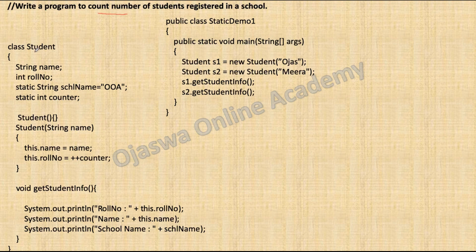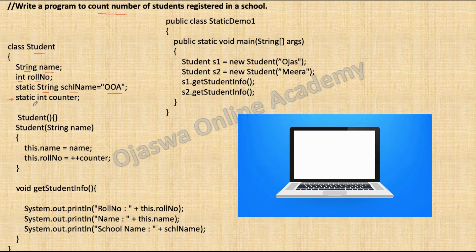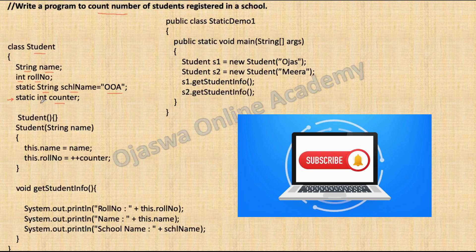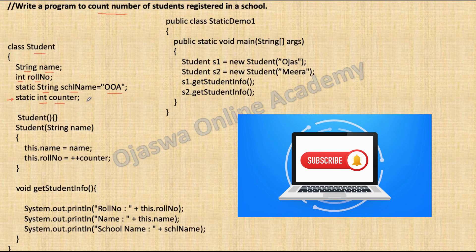We have defined a class named Student. We have defined two instance variables: name of type String and role number of type int. We have a static variable school name of type String, assigned the value 'Double A'. Pay attention to this statement. We have one more static variable named counter of type int. This counter variable will be used to count the number of student objects created in the class.